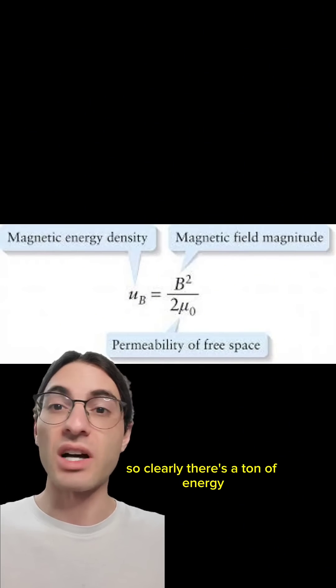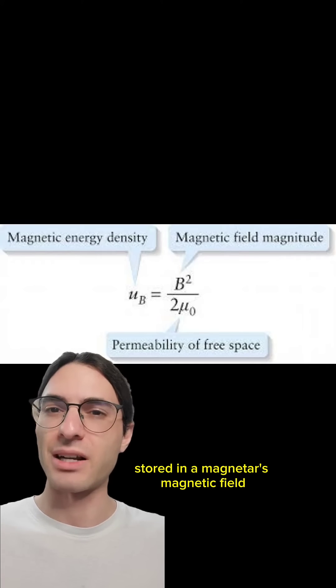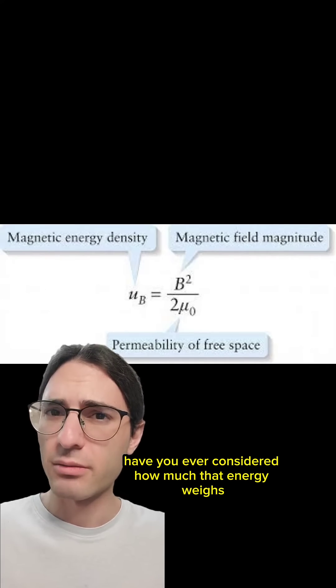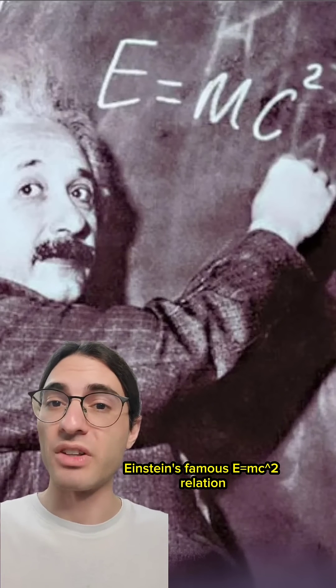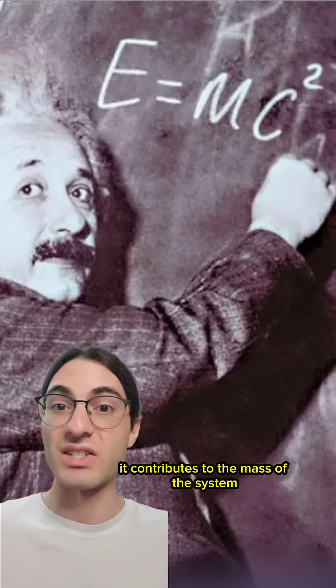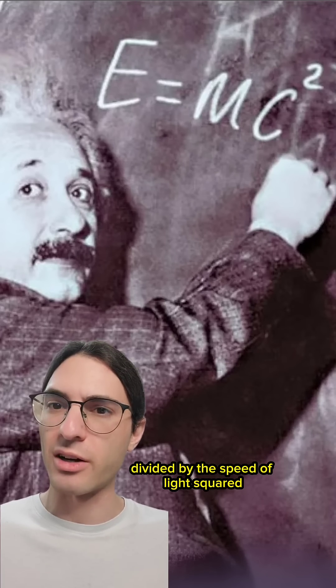So clearly, there's a ton of energy stored in a magnetar's magnetic field. But have you ever considered how much that energy weighs? Einstein's famous E=mc² relation says that if you have some energy somewhere, it contributes to the mass of the system by an amount equal to the energy divided by the speed of light squared.